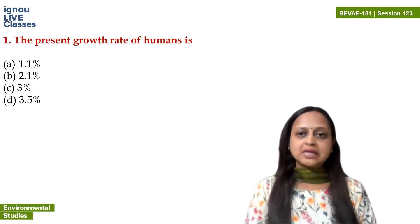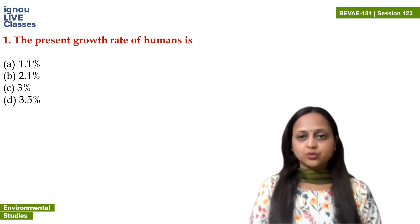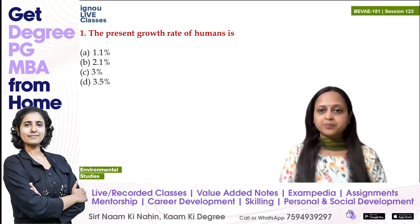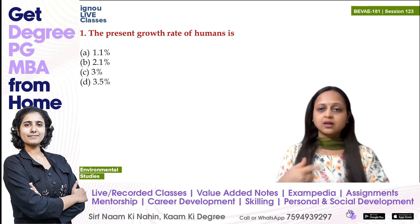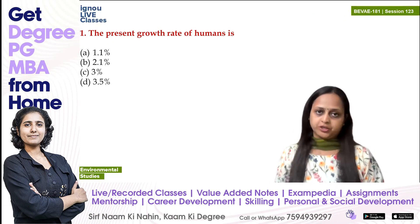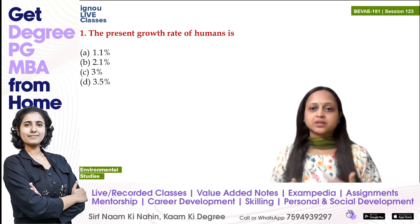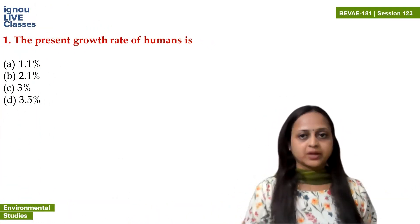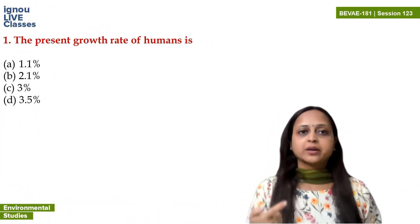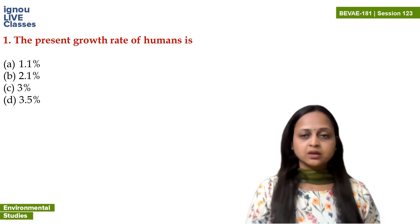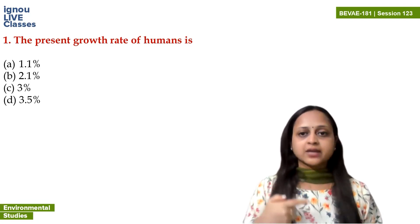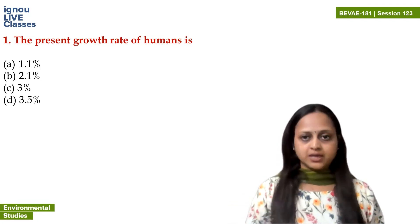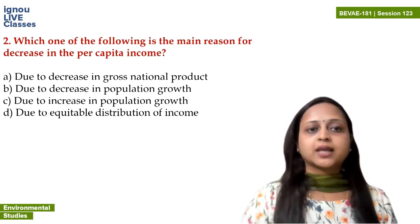75 million people are added annually — 75 million people every year add to our population. So the growth rate is accordingly 1.1%. So 1.1% is the growth rate of humans, where 75 million people are added every year. The answer is A.